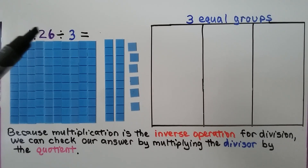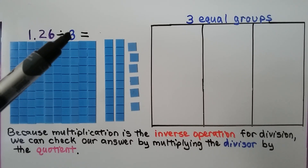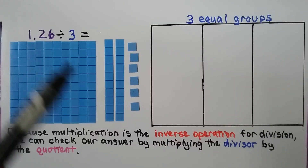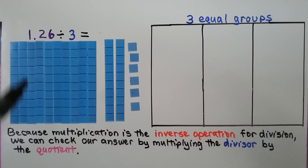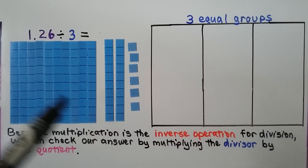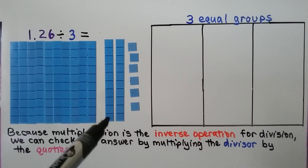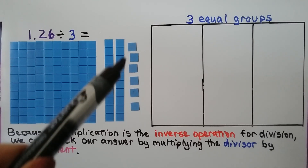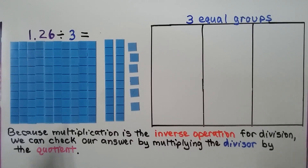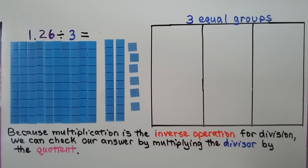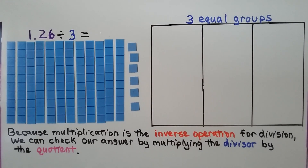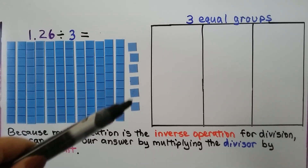Here we have one and twenty-six hundredths divided by three. We have one full square for the one whole, two longs for the two tenths, and six little squares for the six hundredths. We can replace the one big square with ten separate longs as ten tenths, so now we have twelve tenths and six hundredths.